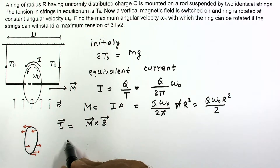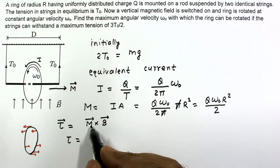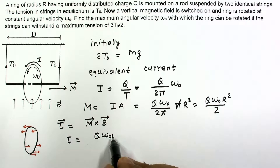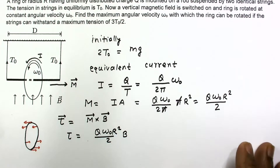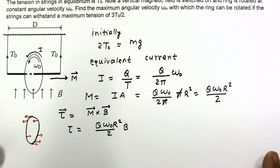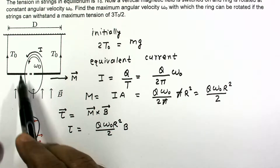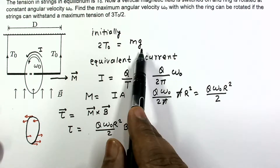Now let us calculate this torque. The magnitude of torque: since M and B are perpendicular, sin90° = 1, so torque = M × B = (QΩ₀R²/2) × B. Net weight is still the same, so total tension will still balance the weight Mg.